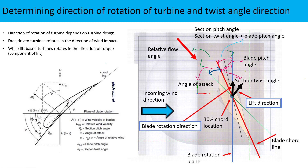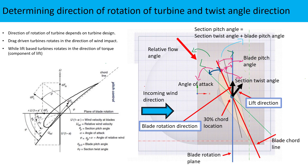Here I have shown one section of the NREL Phase 6 wind turbine blade, which we will work with in this course. The orientation is slightly different: incoming wind comes from one side, the bottom is the pressure side of the aerofoil and the top is the suction side. The leading edge moves forward and the trailing edge follows. The lift acts in a direction that produces torque, which is the lift component minus the drag component. The blade pitch angle, section twist angle, section pitch angle, and angle of attack are all visible here.